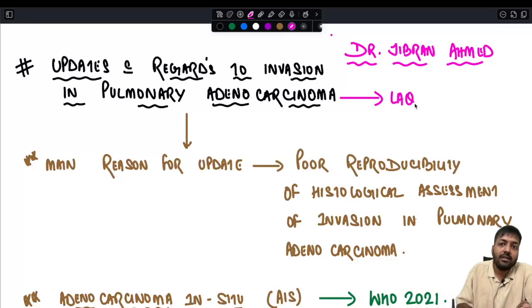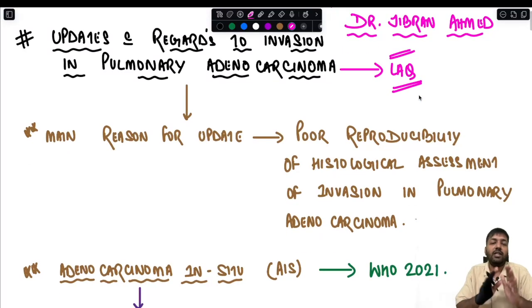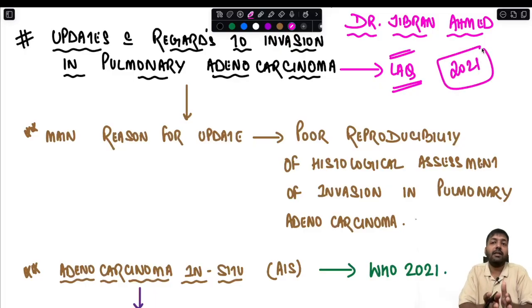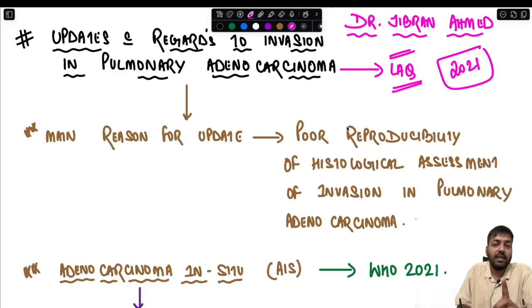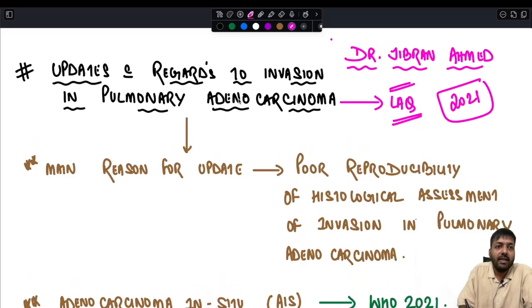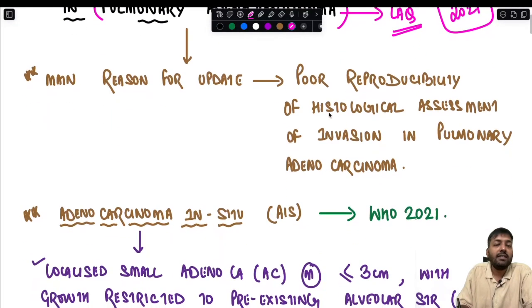This can be asked as a long answer question because this update changes a lot of WHO criteria regarding invasion and adenocarcinoma in situ, which were given in 2021. All those parameters are being redefined and further refined. This is a must question expected at standard institutes like AIIMS and PGI Chandigarh. The main reason for this update is poor reproducibility of histological assessment of invasion in pulmonary adenocarcinoma.